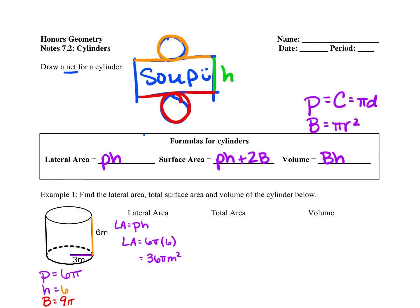For total area — sometimes called total area, also called surface area — we take that lateral area and add the area of two bases to it. So we take the 36π we had before and add two of our 9π bases, and we end up with a total area of 54π meters squared.